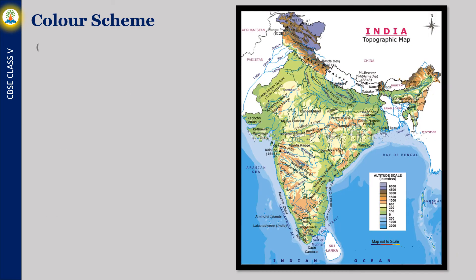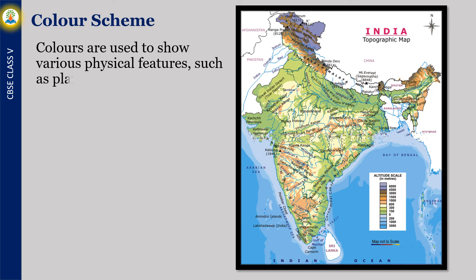Colors are used to show various physical features such as plains, mountains, hills, oceans and seas.